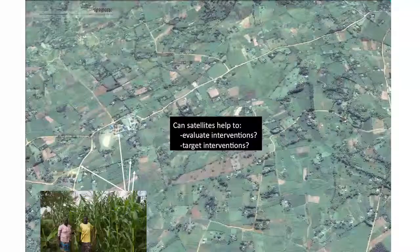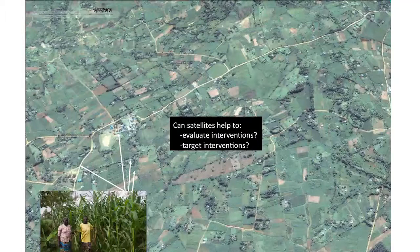Instead of doing intensive field surveys — not only for general characterization but also for looking at the impact of RCTs — what we'd like to do is be able to get a series of images, know that this field is right there, that we did or didn't implement some intervention there, and track the productivity over time and compare it to other places. That's the idea.